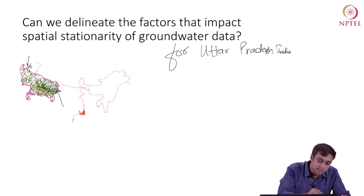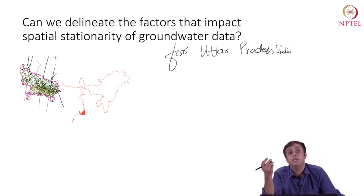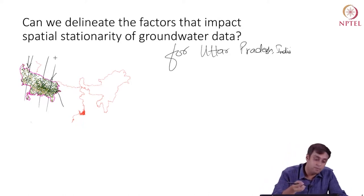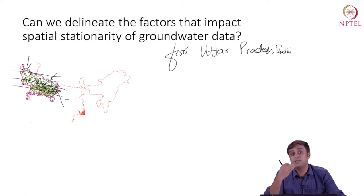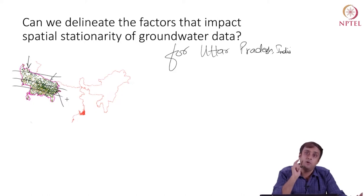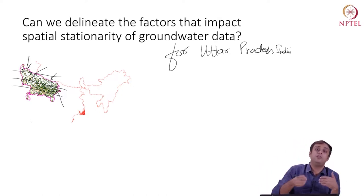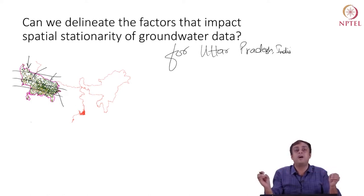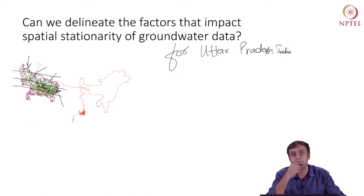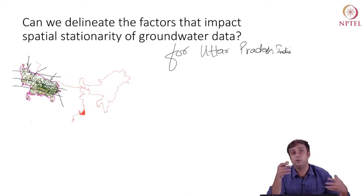Now the question is: where are the stationary domains in these data? Is the entire state a stationary domain in itself? Should I be dividing the state into four equal parts and call each of these domains stationary? Should I divide them vertically or horizontally? Quite clearly, such a decision should not be arbitrary. Because once I define my stationary domain, only then can I say the average level of groundwater in that domain. Unless I have argued that UP is spatially stationary, I cannot say what is the average level of groundwater. The mean statistic is not defined unless I can claim stationarity.